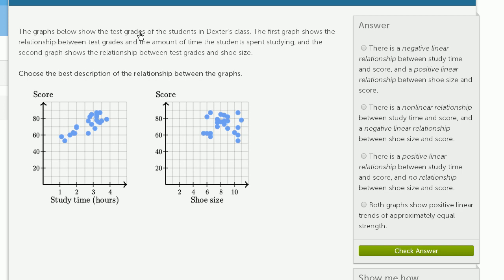The graphs below show the test grades of students in Dexter's class. The first graph shows the relationship between test grades and the amount of time the student spent studying - study time on this axis and test grade on this axis. The second graph shows the relationship between test grades and shoe size - shoe size on this axis and test grade here. Choose the best description of the relationship between the graphs.